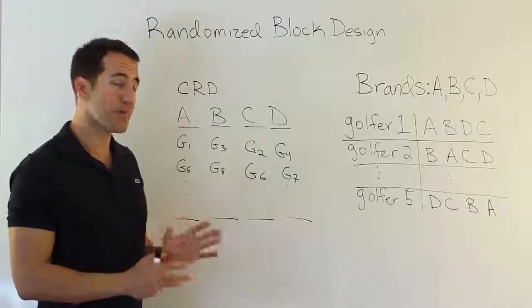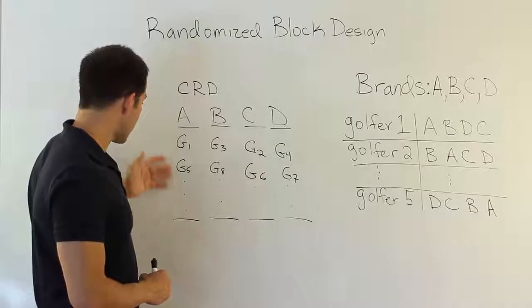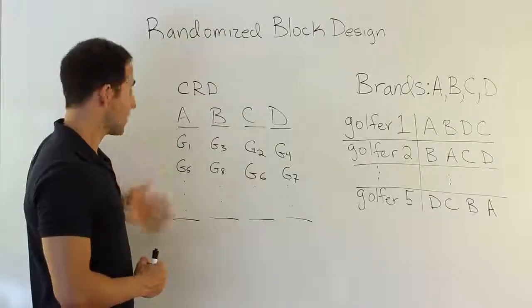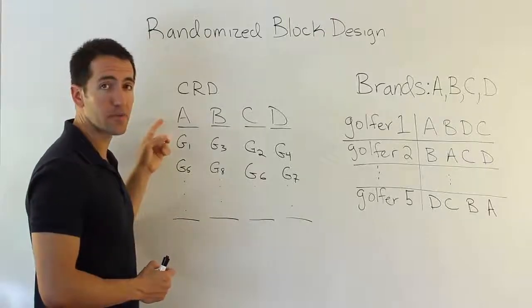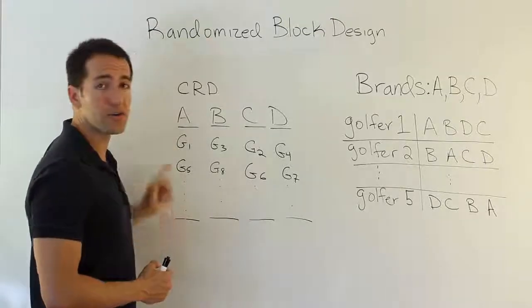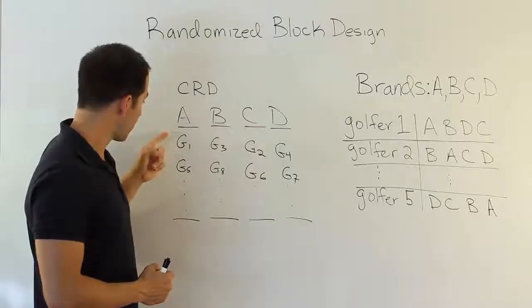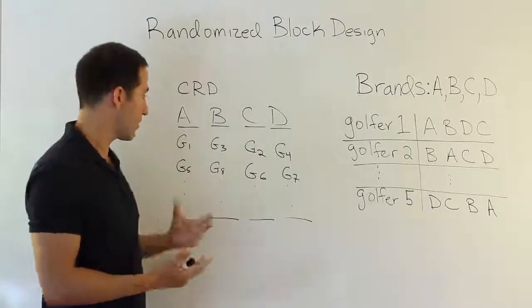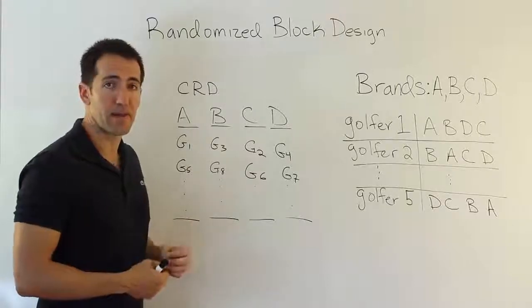What if by randomizing the way we've done it, what if we just happen to just get, unluckily, a bunch of people in this first column here who are not very good at striking the ball? That means that A's performance, the golf ball performance, is going to suffer because these golfers are poor golfers. Not because A is a bad golf ball, but because these golfers are weak, A is not going to do as well in this procedure. We might come up with results that are sort of biased in that way.